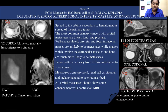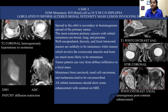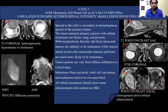Spread to the orbit is secondary to hematogenous spread of the primary tumor. The most common primary cancers that metastasize to the orbit are breast, lung, and prostate. Well-encapsulated, discrete, and focal intraconal masses are unlikely to be metastatic, while masses involving the extraocular muscles and bone are much more likely to be metastasis. The tumor pattern can vary from diffuse infiltrative to a focal mass. However, metastasis from carcinoid tumors, neuroendocrine tumors, renal cell carcinoma, and melanoma tend to be circumscribed, as seen in our case. All orbital metastases should show some degree of enhancement with contrast on MRI.